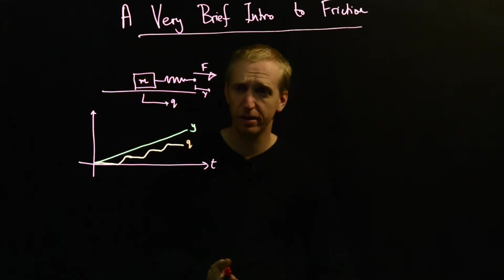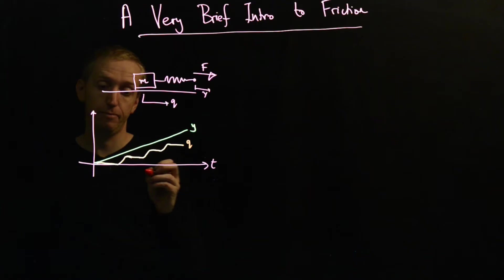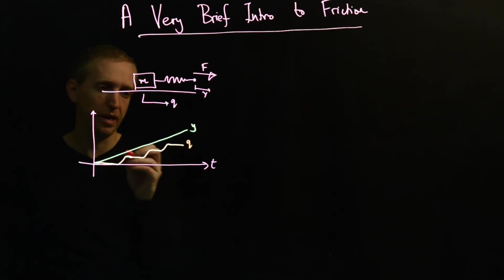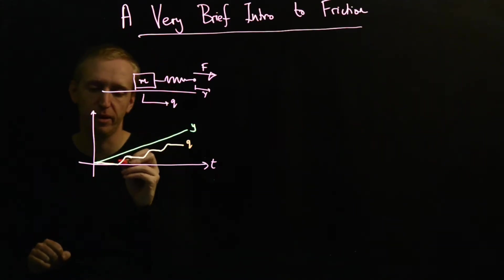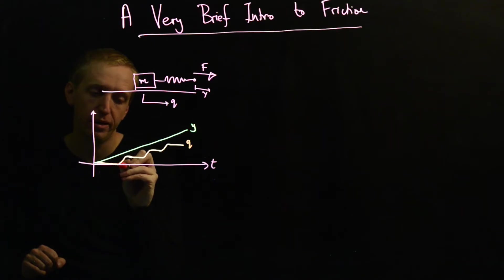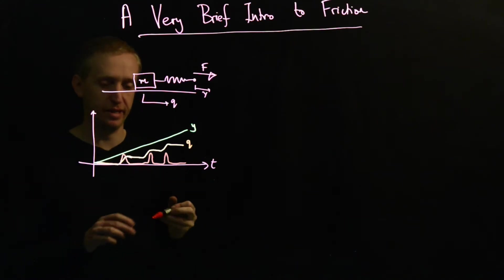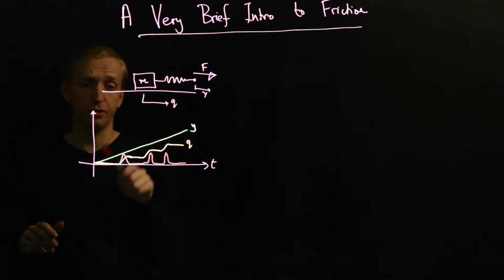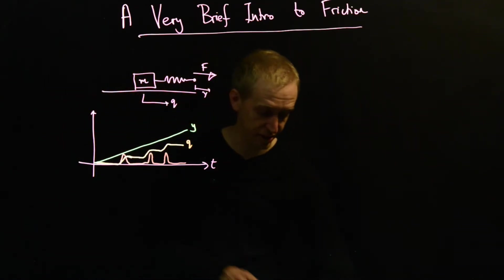And how do we typically model this effect? We model this by making the friction force velocity dependent. So what does the velocity look like here? We start off stationary, then we get these little jumps, then it becomes stationary again, and then little jumps. We're going to model the effect of this nonlinear friction-like behavior by adding in a friction force that is velocity dependent.